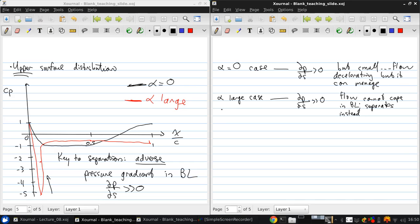Now we've identified when separation will occur. It will occur when there's too strong of an adverse pressure gradient. The next question is, what are the consequences of separation?